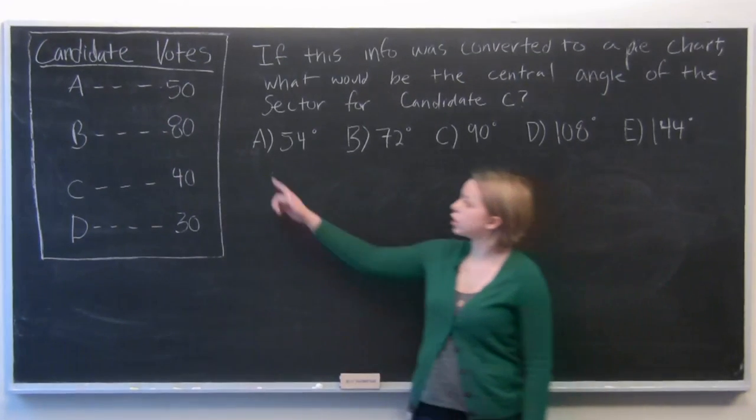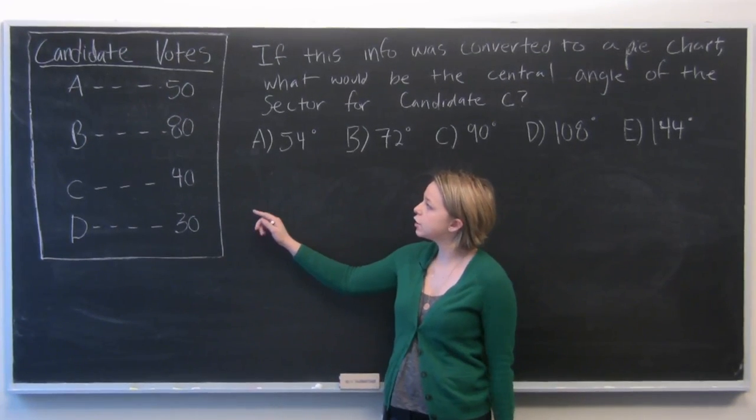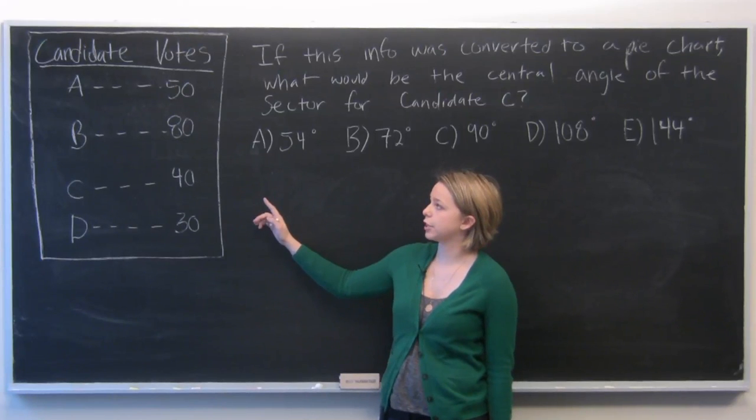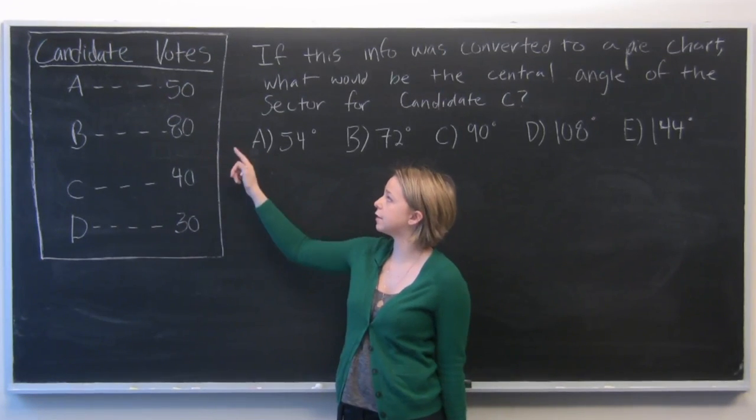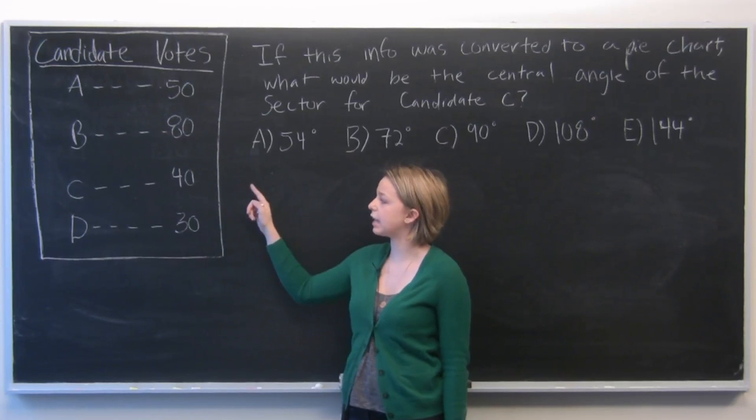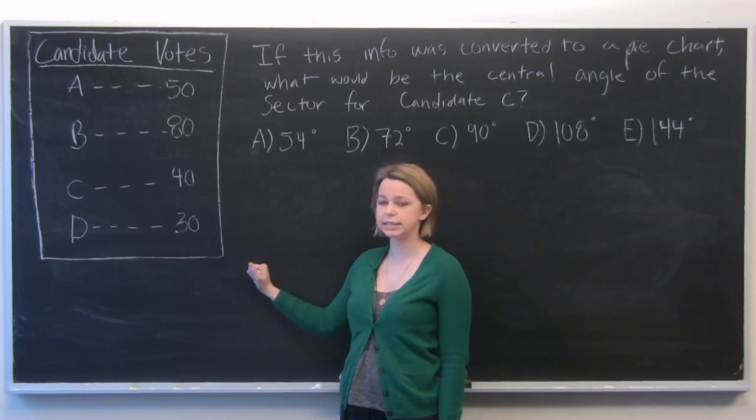So for this problem, we're given a chart that represents 200 votes for each of four candidates. So candidate A received 50 votes, candidate B received 80, C received 40, and D received 30.